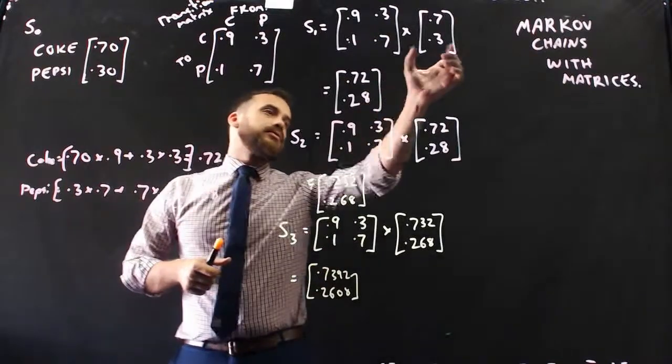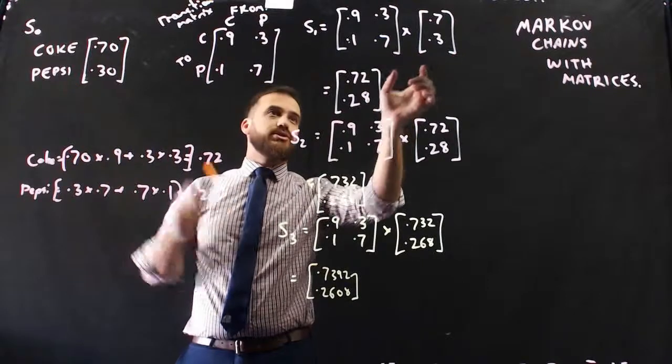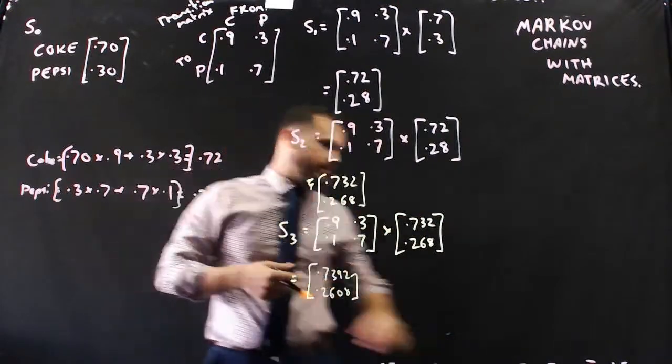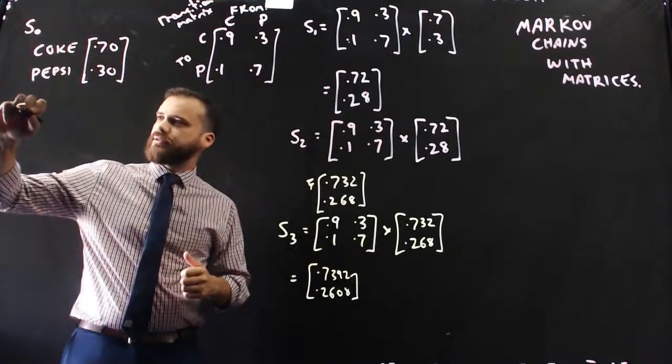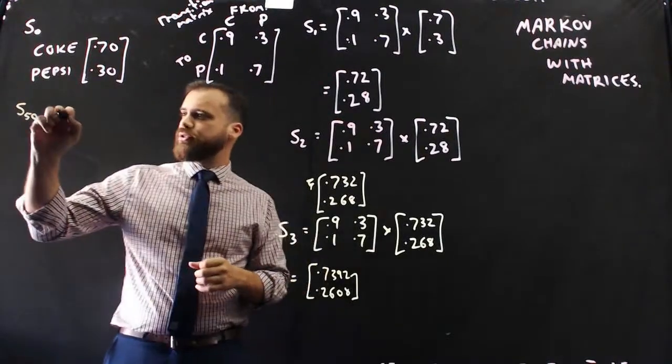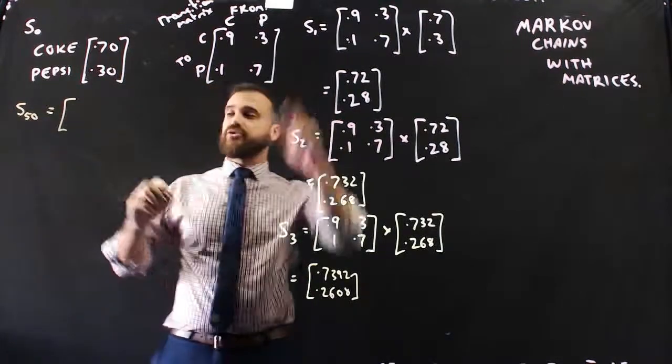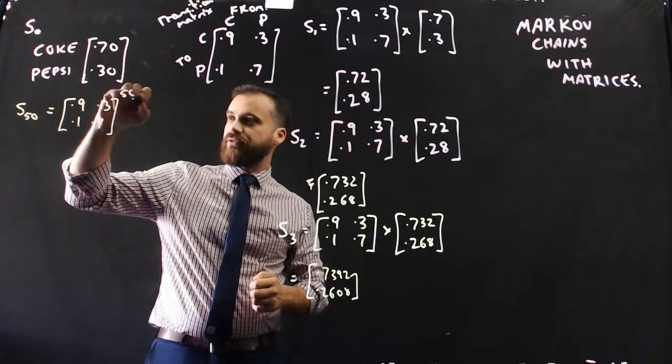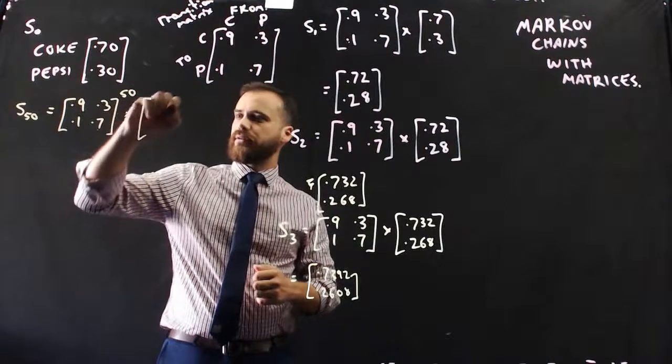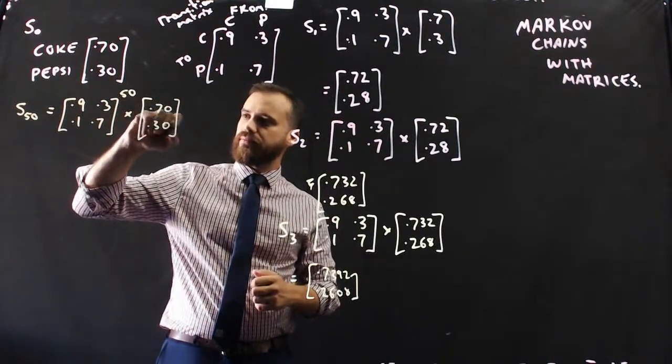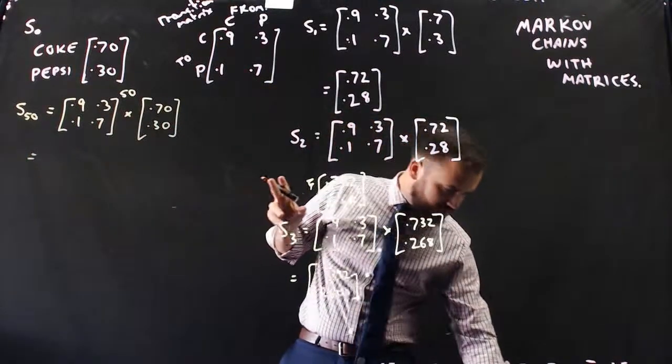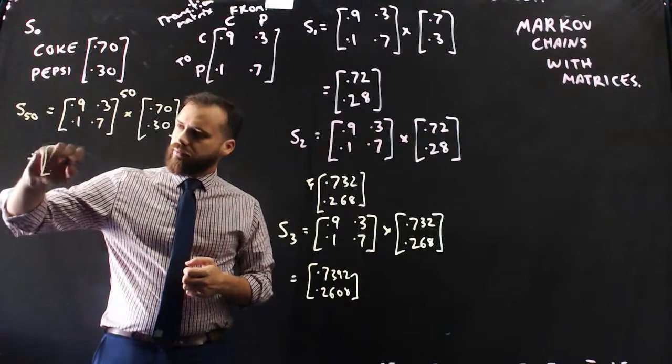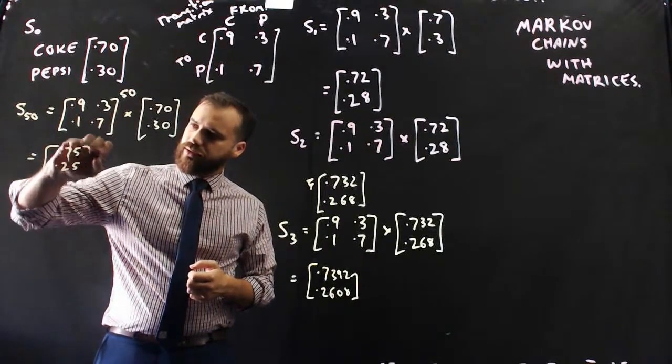Notice what's happening. Transition matrix times initial state. Transition matrix times initial state. Transition matrix times initial state. We can speed up this entire process. If I wanted to know state 50, we can find state 50 by using our transition matrix to the power of 50 and then multiplying it by our initial state. If you type that into your calculator, you should get something like 0.75, 0.25.